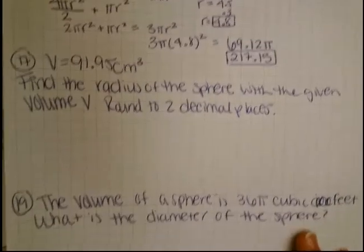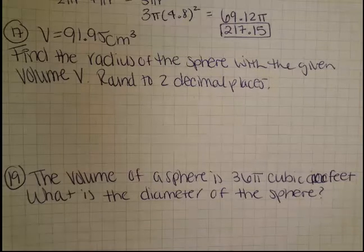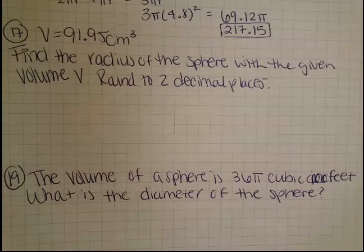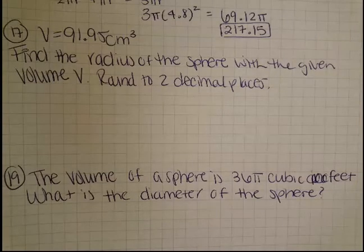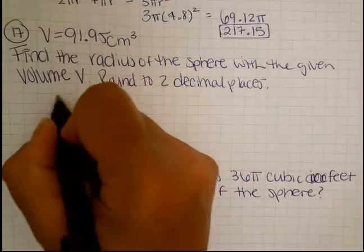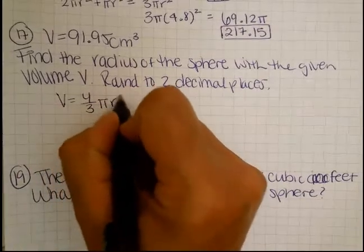Number 17 gives you that the volume is 91.95 centimeters cubed, and they want us to find the radius of a sphere with the given volume. Round to two decimal places. So the volume of a sphere, what is the formula? The volume of a sphere is 4 thirds pi r cubed.